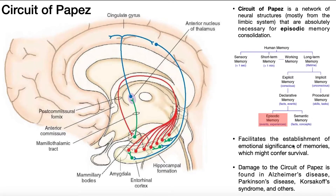The other thing the Circuit of Papez does is establish emotional significance to those memories — it could be good or bad emotional significance. For example, when you graduate high school or college, hopefully that was a great feeling, and every time you think about that event it may conjure up happy feelings. But they don't necessarily have to be good feelings; in some cases the episode in your long-term memory might conjure up negative emotions.